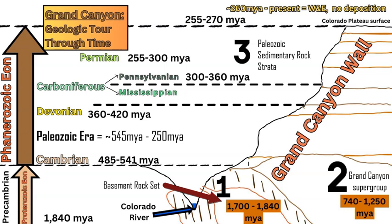There should be two periods in between but they are missing due to the lack of rocks formed in that time — the Ordovician and the Silurian periods. The Devonian period goes from 360 to 420 million years ago. Then we jump into the Carboniferous, where in America we split it into two smaller divisions: the earliest is the Mississippian and the later is the Pennsylvanian, ranging between 300 to 360 million years ago — that's like midway up the canyon wall.